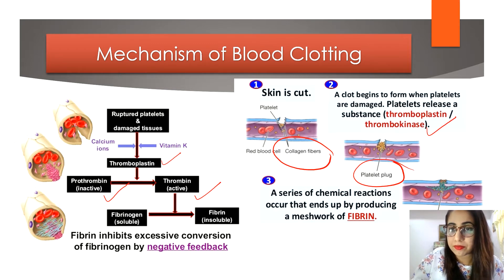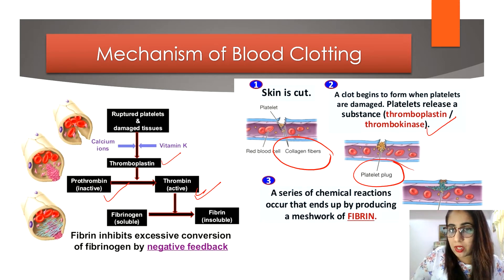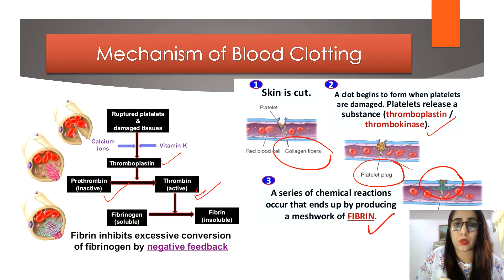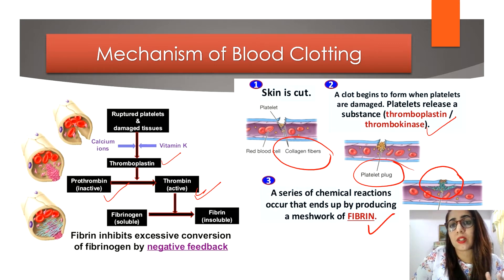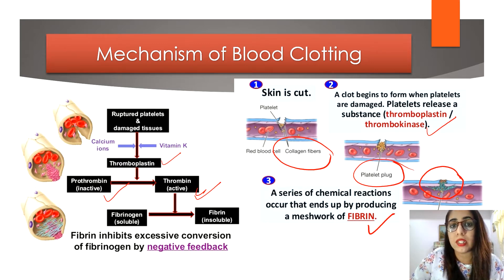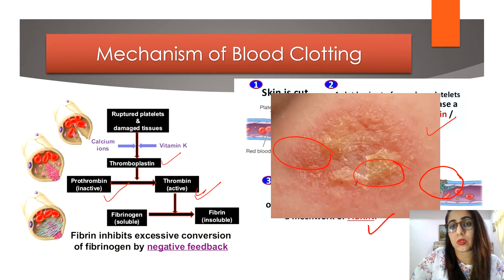As you can see in the third picture, the fibrin network is produced, forming a blood clot that closes the wound. When the blood clots, serum — which is blood plasma without fibrinogen — flows out of the wound in the form of a clear yellow fluid.